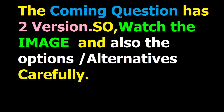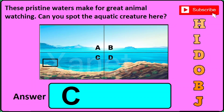This question number one has got two different versions or types, so you need to watch the image and especially you need to see the image of the dolphin. In version one of this question, just watch the image and you can see that a dolphin is in C, so you just have to click C in the answer box if you find this sort of image in question number one.